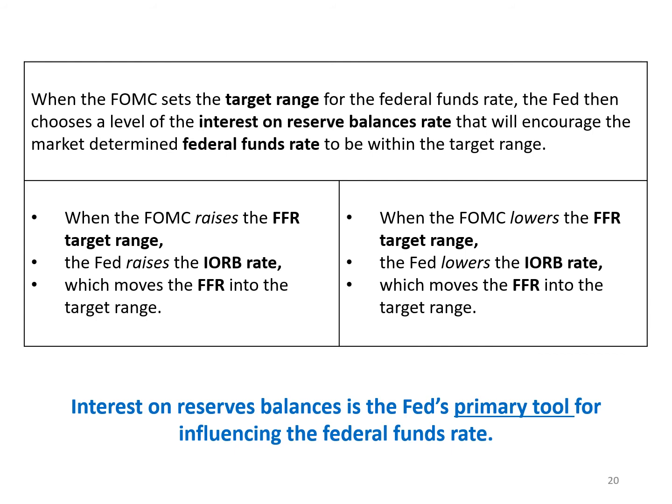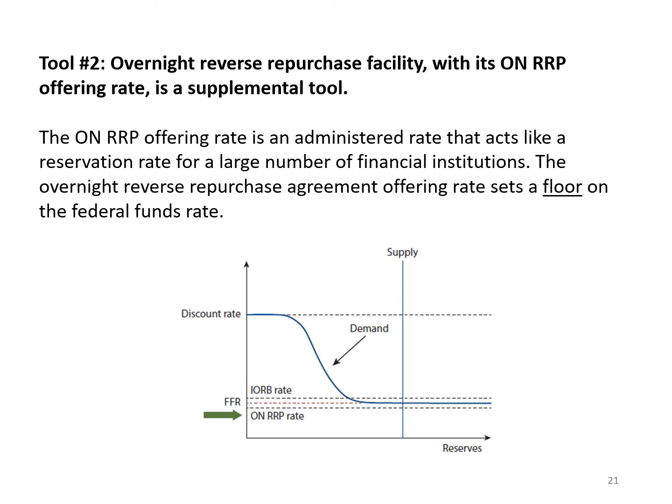Interest on reserve balances is available to banks. The Fed has a second policy tool that works in a similar fashion for other financial institutions. The overnight reverse repurchase agreement facility is open to large financial institutions where these institutions can deposit their funds and earn the overnight reverse repurchase agreement rate offered by the Fed. It works just like interest on reserves but for other large financial institutions — the rate sets a reservation rate for these institutions and they can arbitrage. The overnight reverse repurchase agreement rate therefore sets a floor for the federal funds rate and helps keep the federal funds rate in the target range.